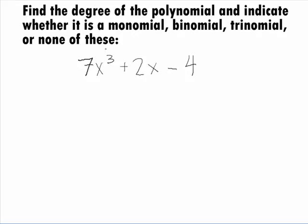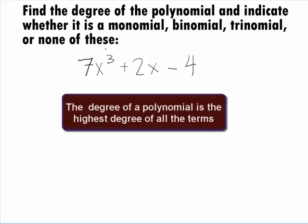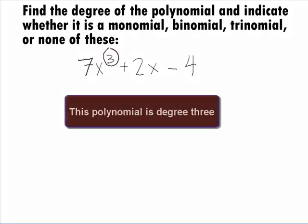When looking for the degree of a polynomial, we need to find the term with the highest degree. This will give us the value that we are seeking. It looks like the term with the highest degree is 7x to the 3rd. The degree of this term, as well as the polynomial, is 3.